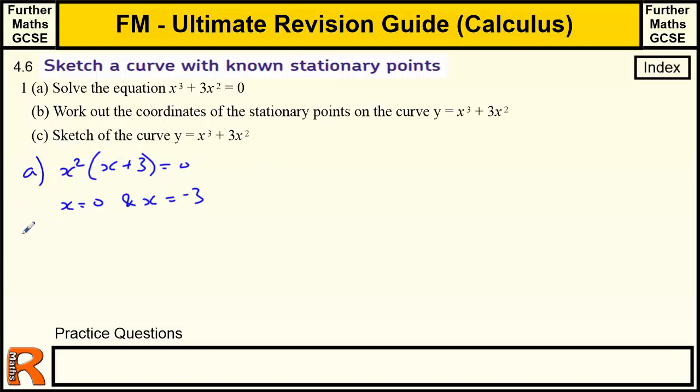Part B, let's work out the coordinates of the stationary points of the curve. So dy/dx will give us, when that equals 0, will give us the stationary points. So differentiating that, we get 3x² + 6x. We want to make that equal to 0 to get the stationary points. Again, we can factorize out an x.